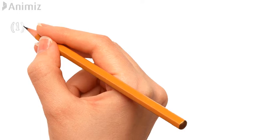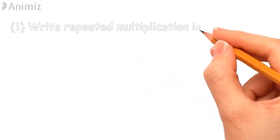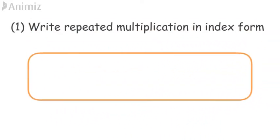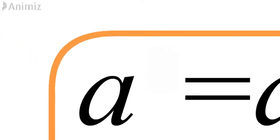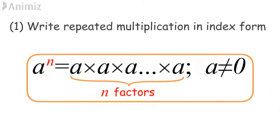Number 1: write repeated multiplication in index form. The value of the index is the same as the number of times the base is multiplied repeatedly, where a is not equal to 0.